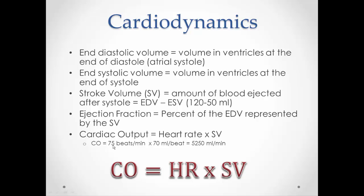For example, if I have 75 beats per minute as a heart rate, and every time the heart beats I pump out 70 milliliters, then together that gives about 5,200 milliliters per minute — over five liters of blood per minute. That's actually our total blood volume, so we're pumping our entire volume of blood every minute.